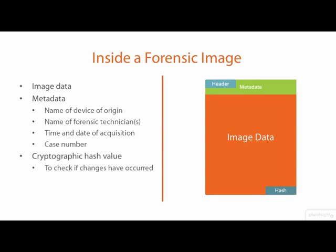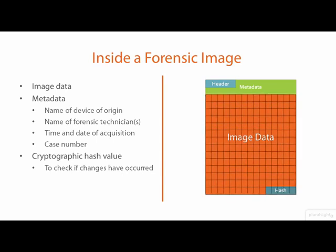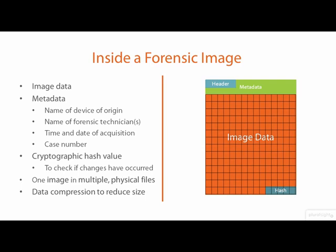Forensic image file formats also provide convenience in the physical handling of forensic information. If you were to acquire the image of a 1TB media partition, you probably would not find it convenient to store it as a single 1TB file. Your storage and analysis requirements might prefer the image be stored as four 250GB files or as 250 4GB files. Forensic image formats support the storage of a single forensic image in multiple physical files. Some also support applying lossless data compression to the bit image to make the image files smaller, but there is no guarantee how much smaller any acquired image can be compressed.